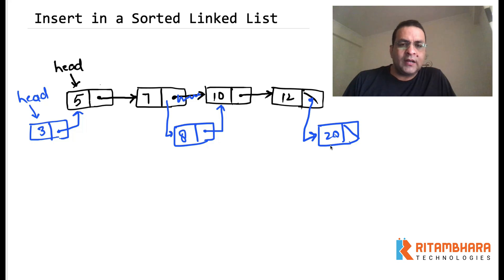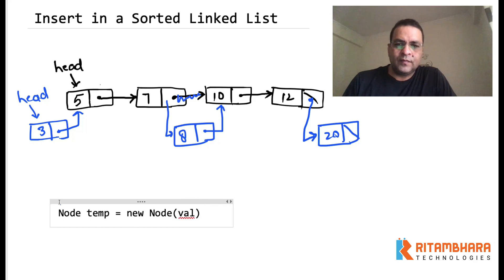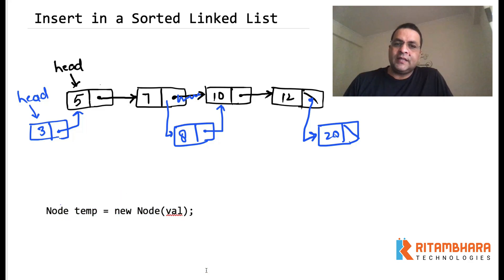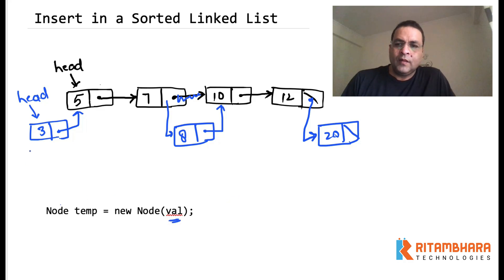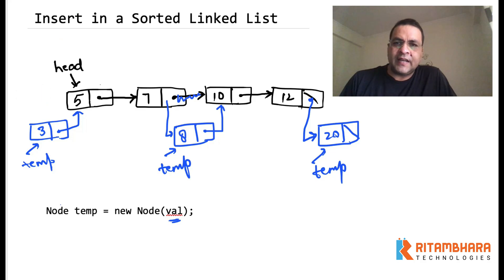In all three cases, because we are inserting a node we will be creating a node. So let's say we create a node: node temp = new node(value). We assume that we have a node class and the constructor creates a node where data equals value and next is null. So in each scenario temp is pointing to that new node. Let's call these three different scenarios 1, 2, and 3.